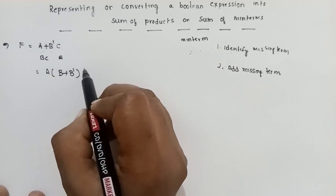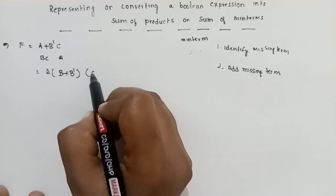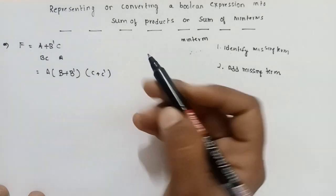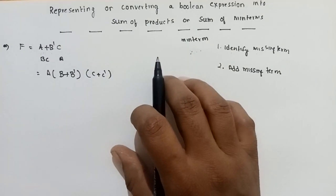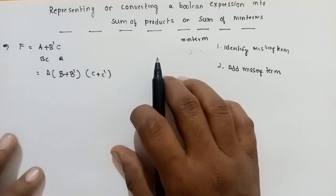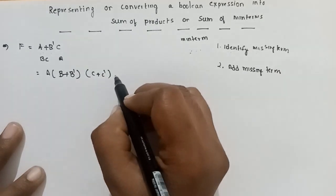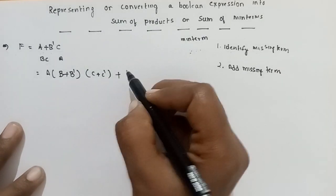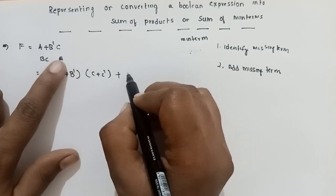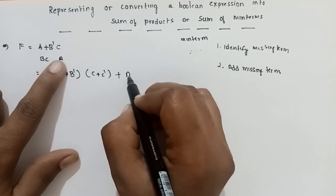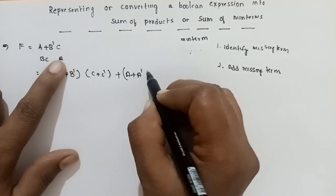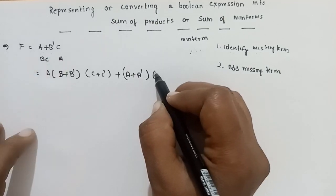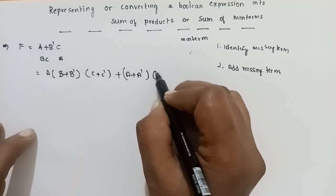Here B is missing — B plus B dash value. Mora is missing. In this case, A is missing.